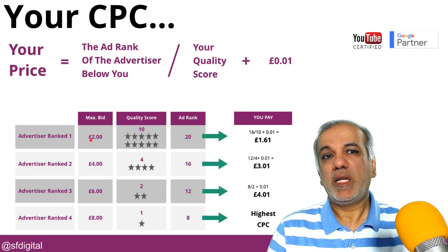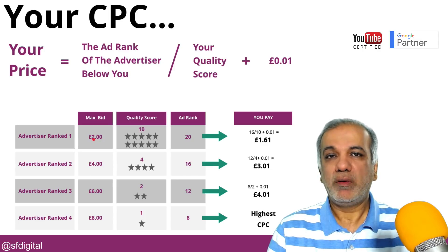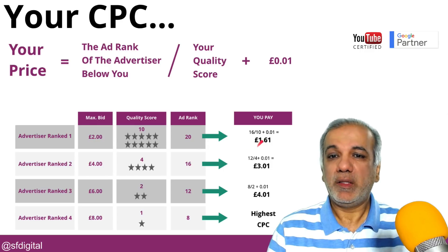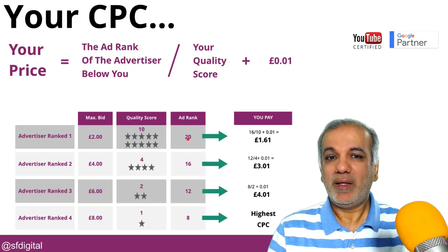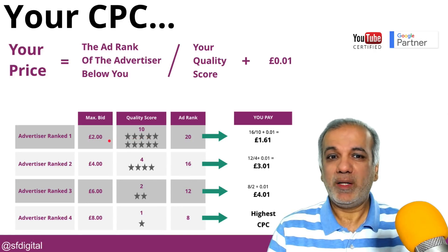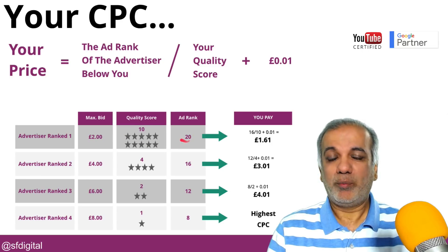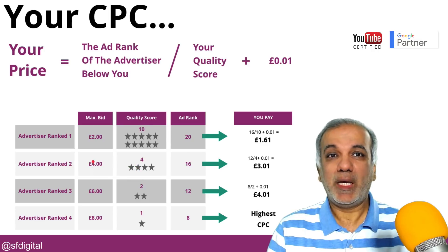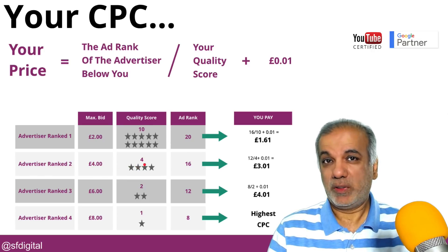Now let's say the advertiser ranked number one started to increase their bid to four pounds. That does not mean that Google is going to charge them more — they will still pay the same CPC. But the ad rank is going to jump to 40, and the rest of them will really struggle to get ad rank number one. Because to beat ad rank 40, they will either need to increase their max bid or increase their quality score.